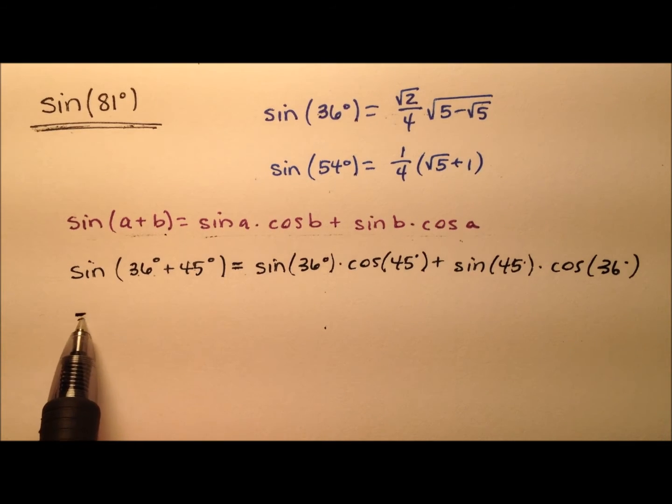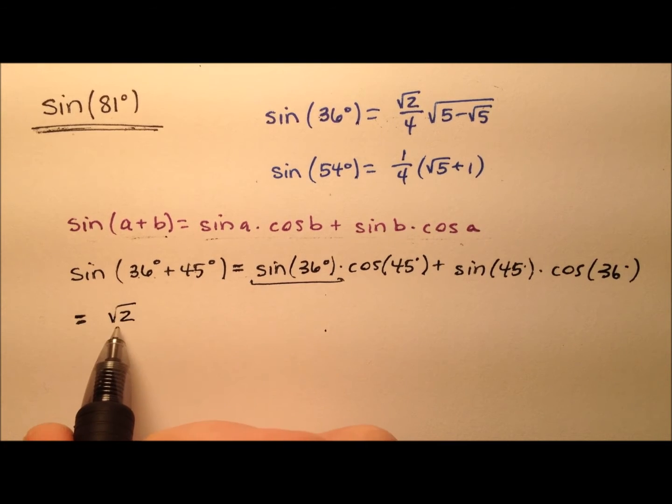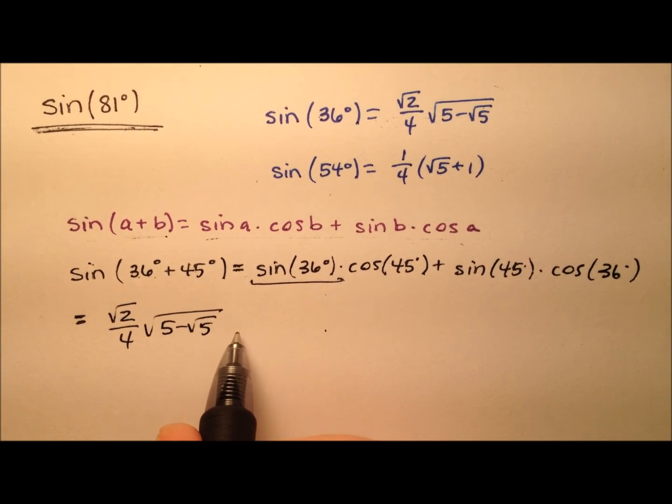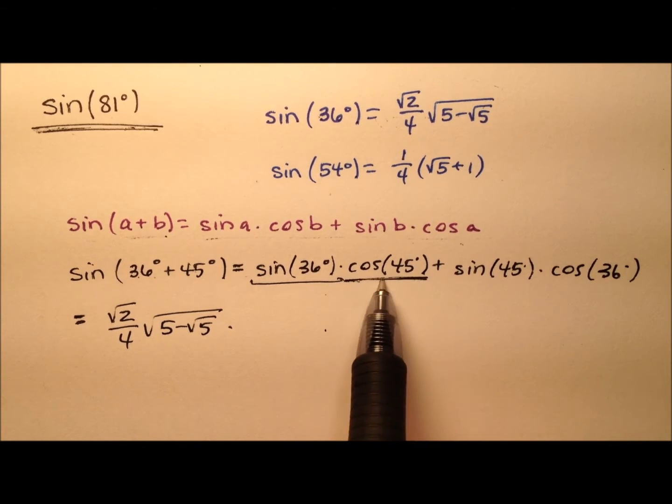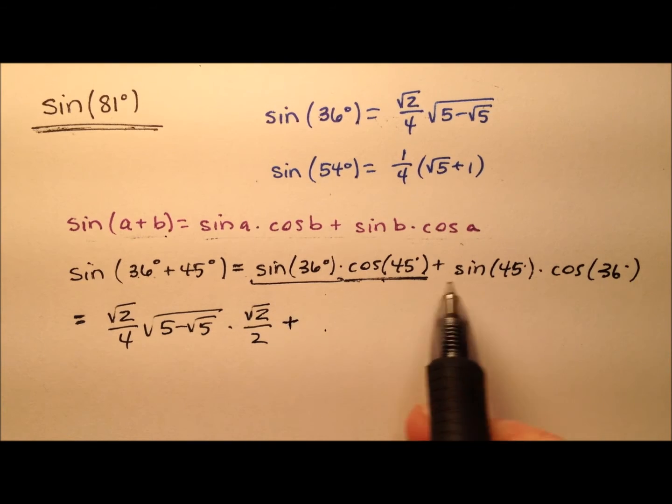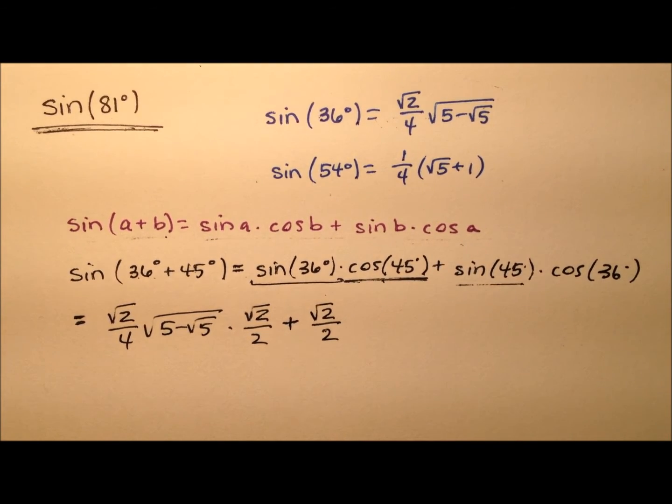The sine of 36, we have just right up here. That's going to be the square root of 2 over 4 multiplied by this radical expression. I'm going to multiply that by the cosine of 45 degrees, which is just the square root of 2 over 2. And to that, we'll add the sine of 45, which similarly is the square root of 2 over 2, times the cosine of 36 degrees.